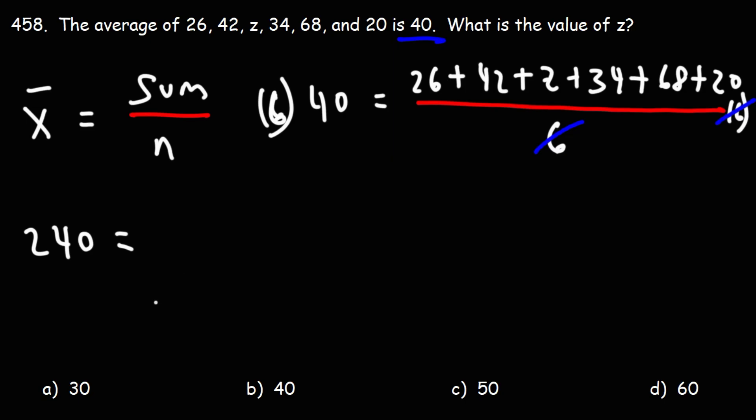And that's going to equal 26 plus 42 plus Z plus 34 plus 68 plus 20. Now let's combine like terms. Let's add these five numbers.